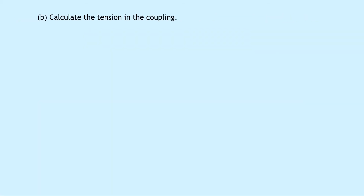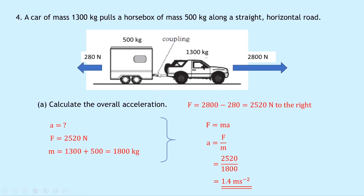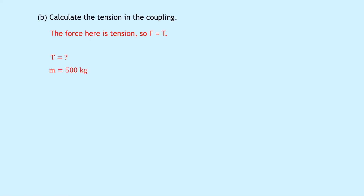Part B asks to calculate the tension in the coupling. The force in the coupling is tension, so we can rewrite force F as T. The mass causing this tension is the 500 kilogram horse box, since that is what is being pulled along. So the mass equals 500 kilograms and the acceleration is 1.4 meters per second squared. Writing T equals MA and substituting: 500 times 1.4 gives a final answer of 700 Newtons.